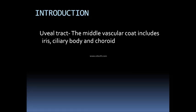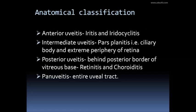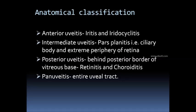There are various classifications for uveitis. It has been classified into anterior uveitis, intermediate uveitis, posterior uveitis, and pan-uveitis. The reason it has been divided into different types based on anatomical positions is that the presentation is quite different for each. For example, anterior uveitis presents with pain, intolerance to light, and decreased vision.